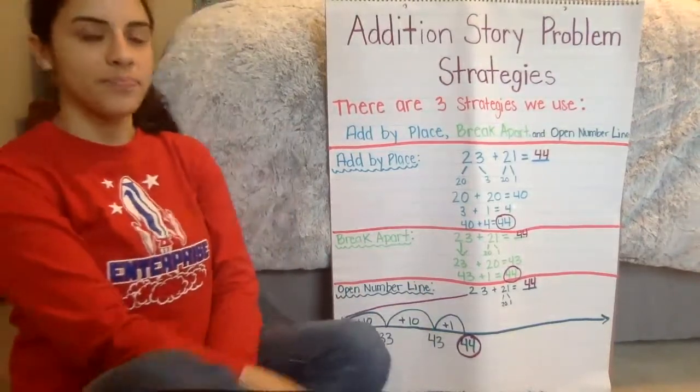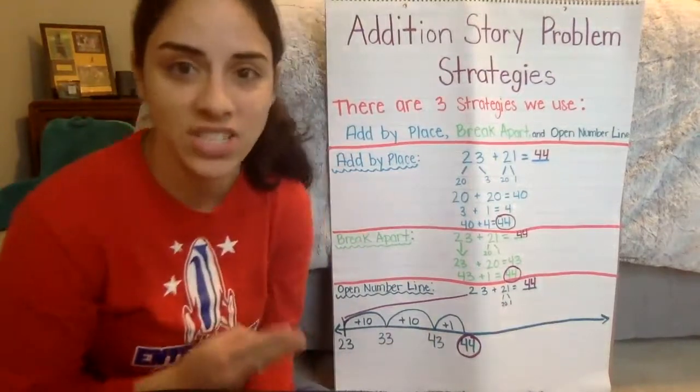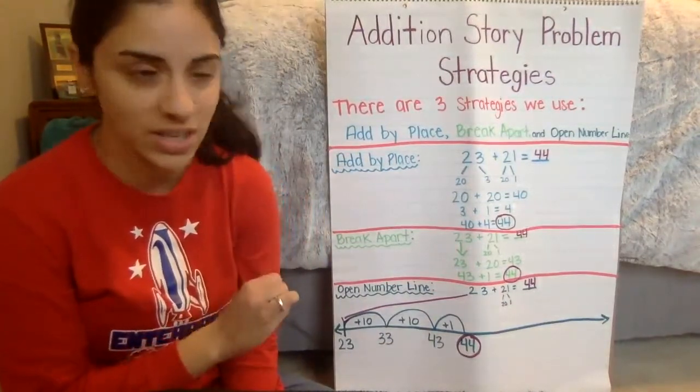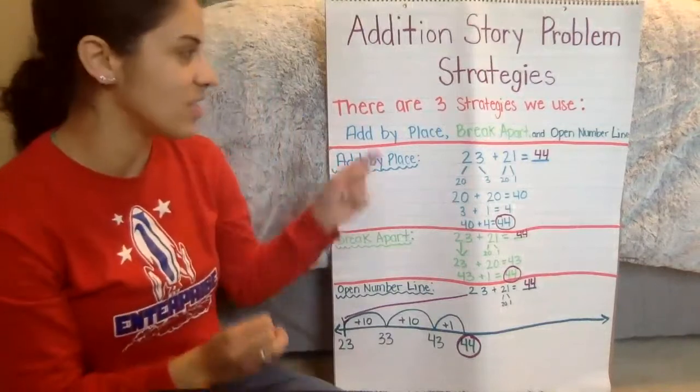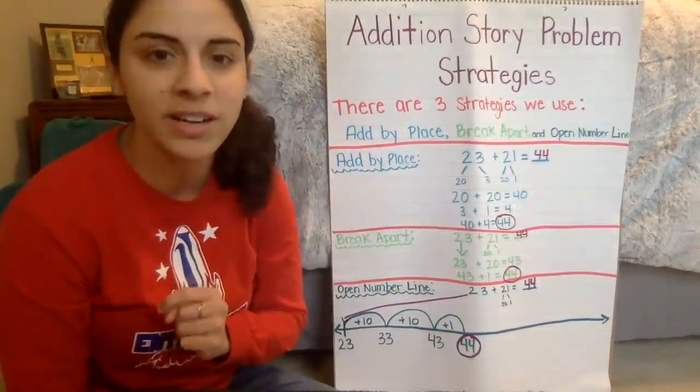There are three strategies when we're solving story problems for addition. Hopefully, you remember that. They are add by place, break apart, and open number line.